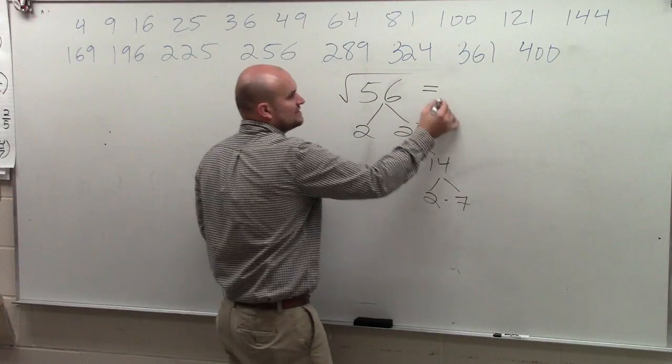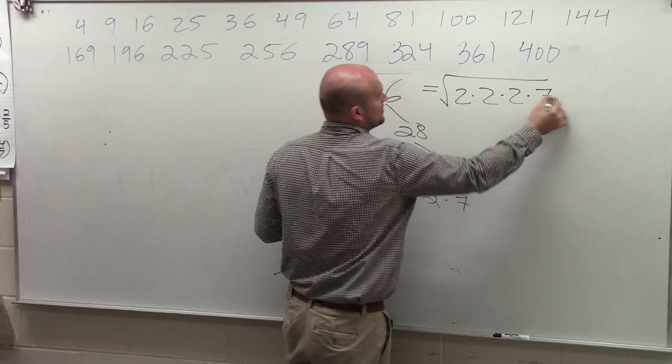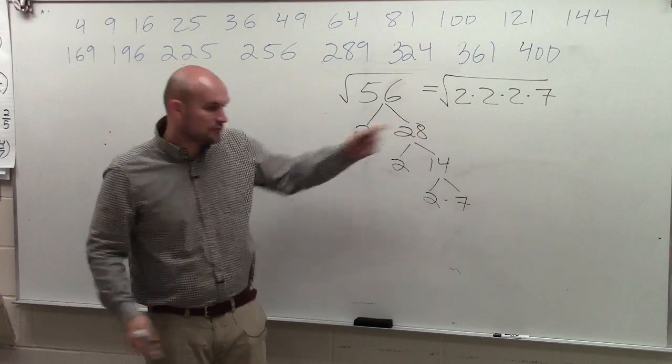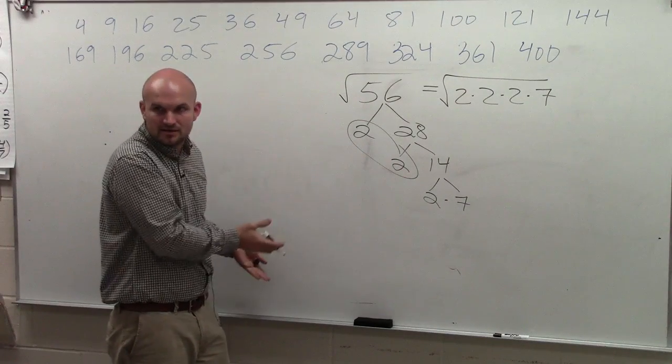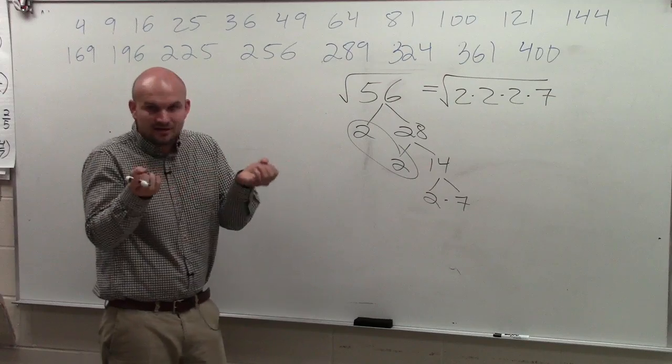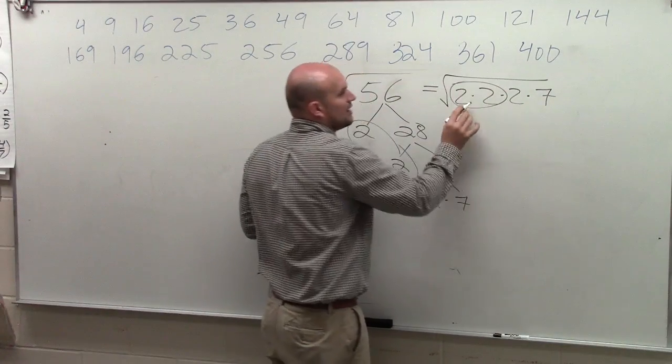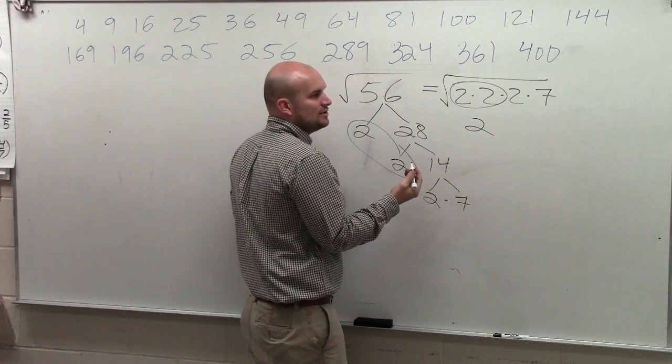So therefore, I can say the square root of 56 is equivalent to 2×2×2×7. Now, how many of those can I take the square root of? Well, remember, you can only take the square root when you have a pair. You guys understand that a pair of numbers that are exactly the same, you can take the square root of. So therefore, I can take the square root of 2×2, which is just 2. I don't need a square root anymore for the 2.